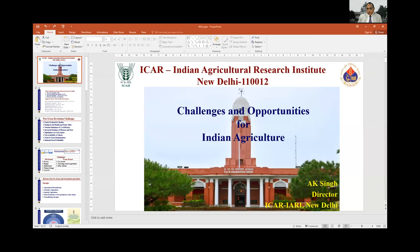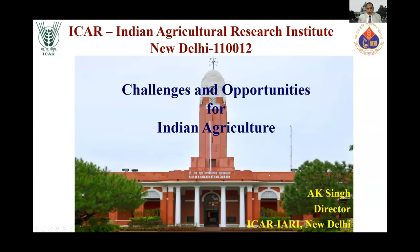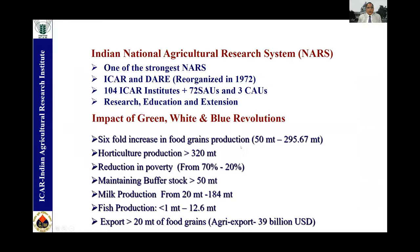Looking at the challenges and opportunities for Indian agriculture, the Indian national agriculture research system is a very robust system globally — one of the strongest national agriculture systems, with 104 commodity-based institutions, 72 state agriculture universities and three central agriculture universities, responsible for agriculture research, education, and extension in the country. This has led to the green, white and blue revolution. There has been a six-fold increase in food production from 50 million tons in 1950 to the current level of 295.67 million tons, and horticulture production has gone up to 320 million tons.